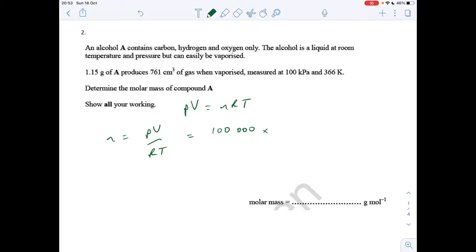So 761 cm cubed, it's got to be in metres cubed. So I just put times 10 to the minus 6 at the end. Divided by R, 8.314, multiplied by temperature, which has to be in Kelvin, well it is, so 366.